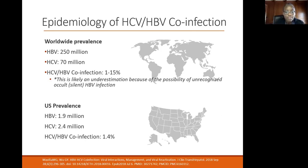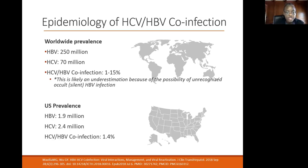This number may be an underestimation of the true number just because there may be an unrecognized or occult B infection in these patients. The U.S. prevalence of hepatitis B is 1.9 million, and hepatitis C is 2.4 million. Again, these numbers may be lower than the actual numbers due to underreporting or lack of diagnosis. The co-infection rate with both is 1.4 percent.